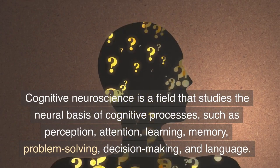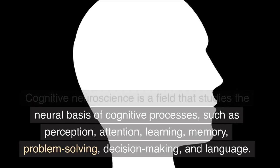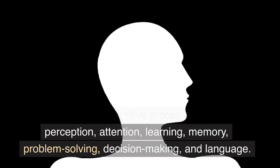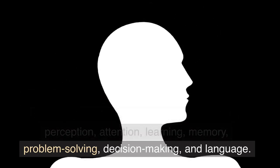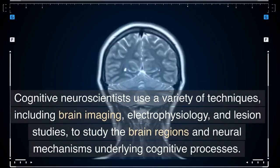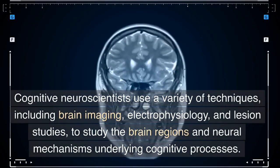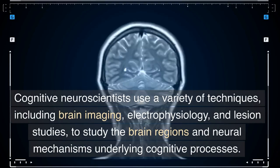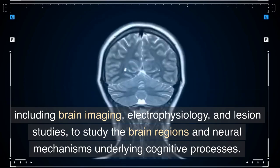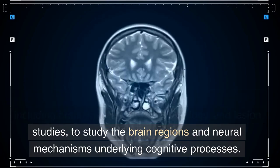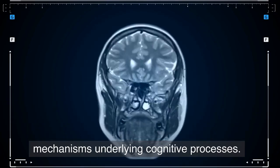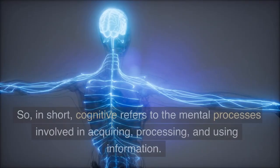Cognitive neuroscience is a field that studies the neural basis of cognitive processes such as perception, attention, learning, memory, problem solving, decision making, and language. Cognitive neuroscientists use a variety of techniques, including brain imaging, electrophysiology, and lesion studies to study the brain regions and neural mechanisms underlying cognitive processes.